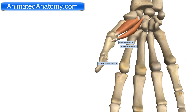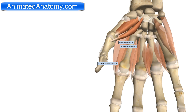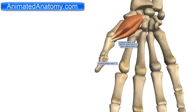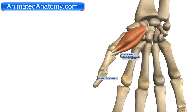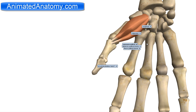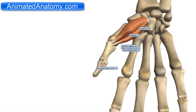The next muscle in the lateral group is the abductor pollicis brevis. That muscle is above these two muscles, right here. The abductor pollicis brevis has the origin on the scaphoid bone here, and also on the trapezium bone here. The insertion of this muscle is the proximal phalanx of the thumb and the thumb extensors that I talked about in the other lesson. Since it is the abductor pollicis brevis, it serves for the abduction of the thumb.